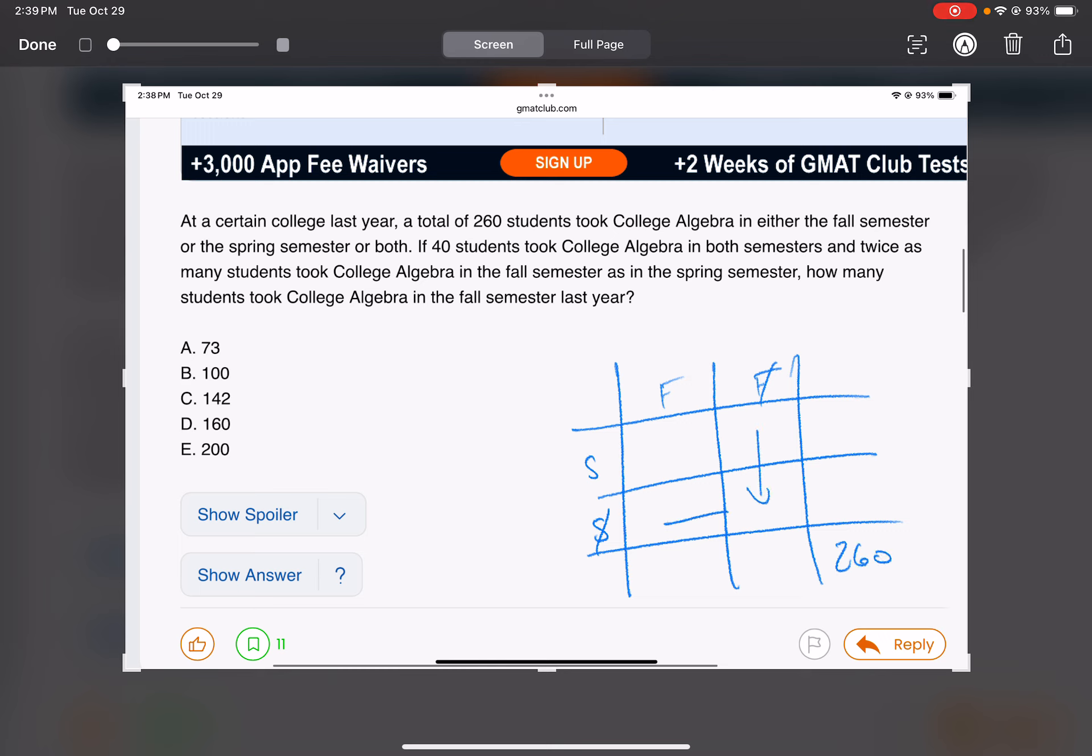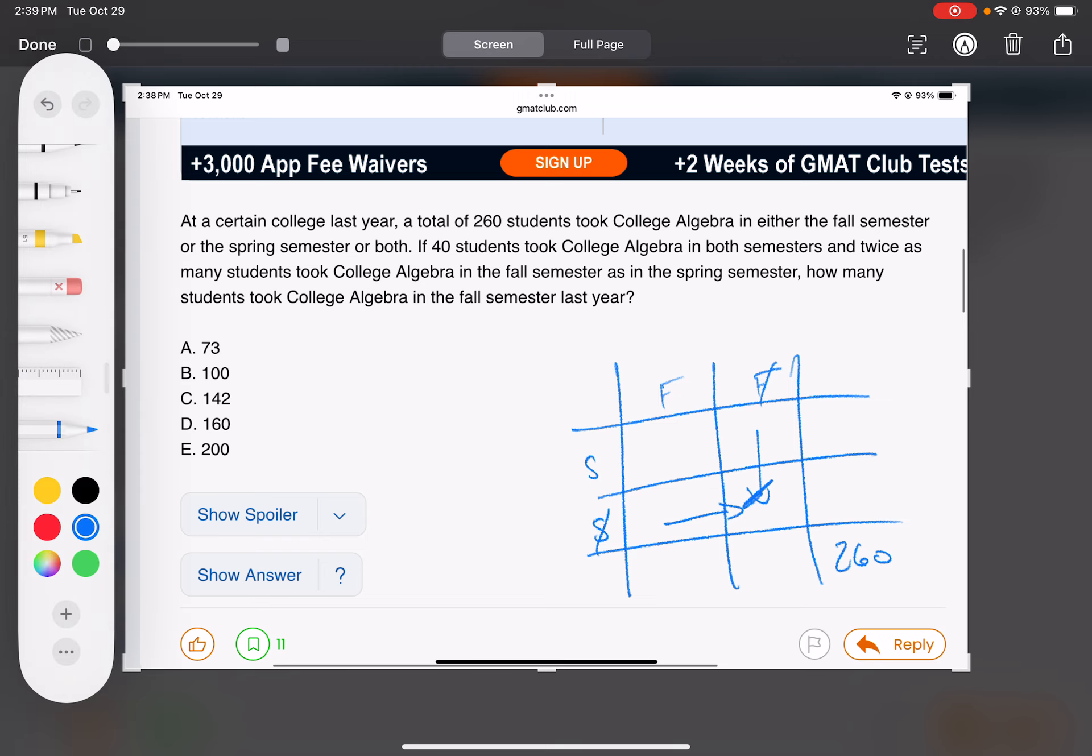In this box where they didn't take it in either, that's just zero because as they say, they did fall or spring or both, meaning there's nobody in consideration anymore who didn't take it at all. 260 took it at some point, so the neither in this situation is zero, or the none is zero.